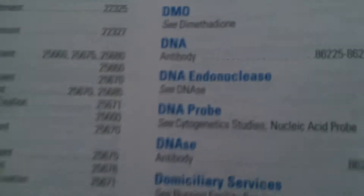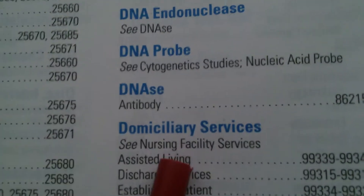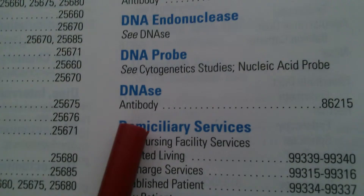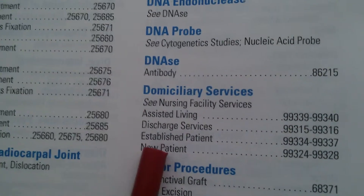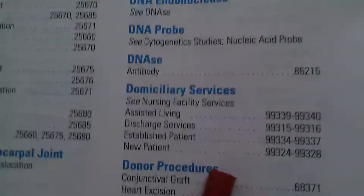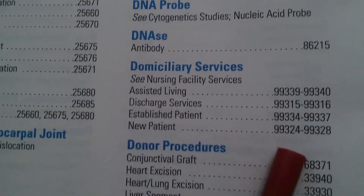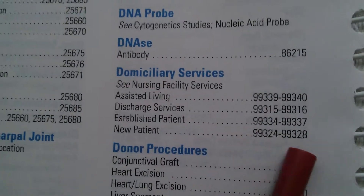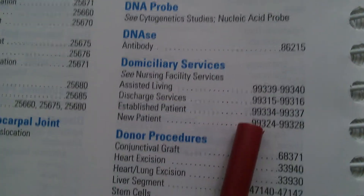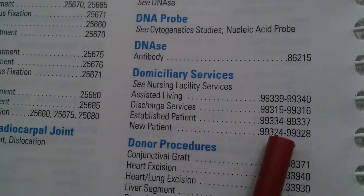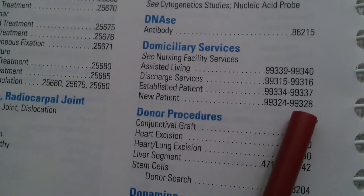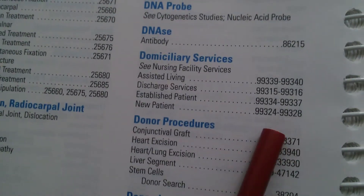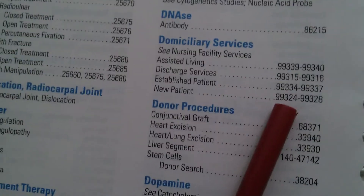Here we go — domiciliary services under the D. From there we go to 'new patient.' We have choices: assisted living, discharge services, established patient, and new patient. Since our case says new patient, we go to new patient. They give us a range of codes: 99324 through 99328. So our code is one of those from 24 to 28.